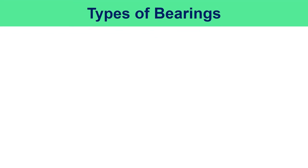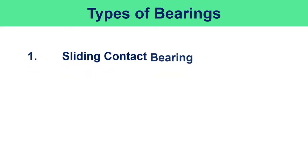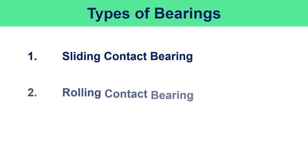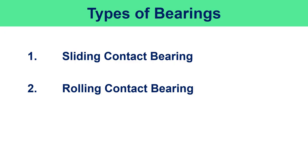Now let us move on to the types of bearings. There are generally two main types of bearings: sliding contact bearings and rolling contact bearings. Let's get to the definitions of these types.